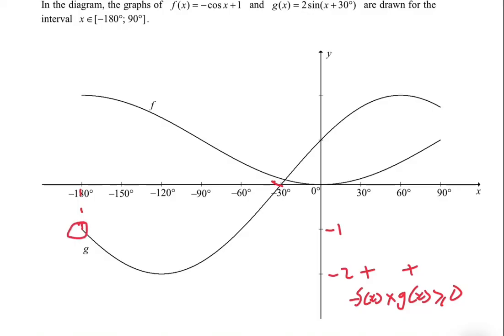At -180°, g(x) seems to be at -1. And where else? Let's just draw a line and see. And at -60°, it seems like it's at -1.